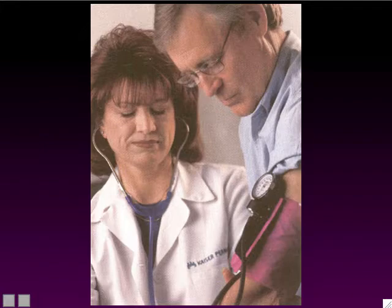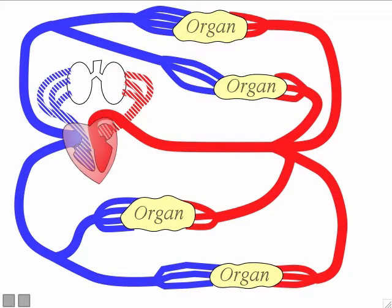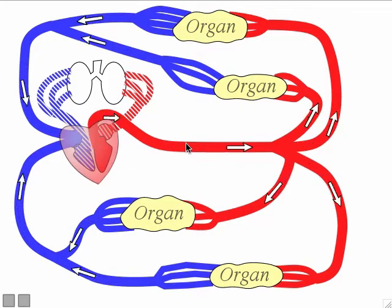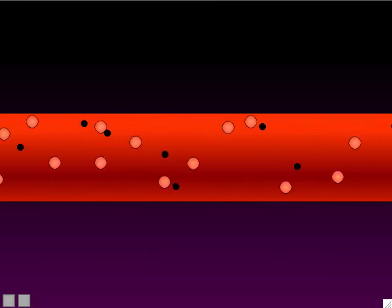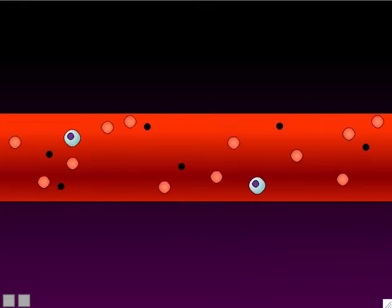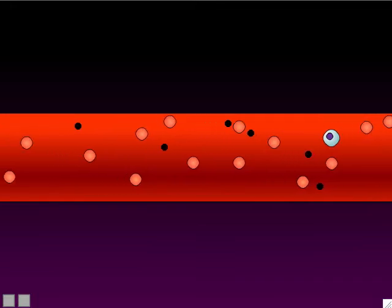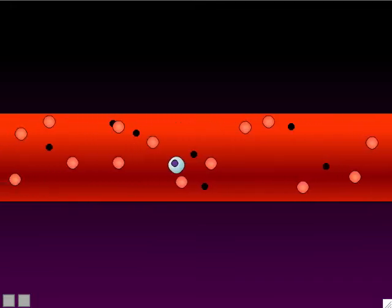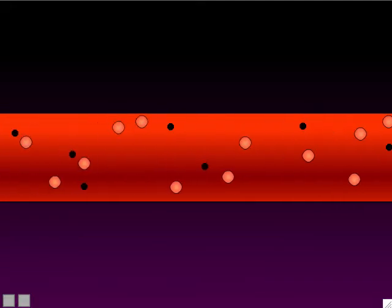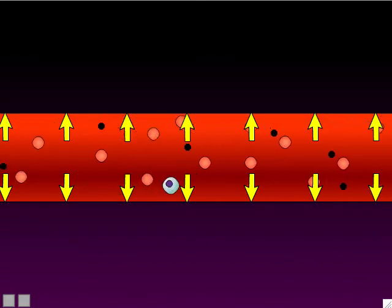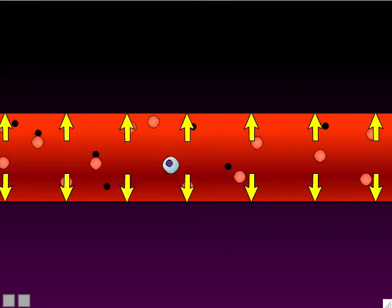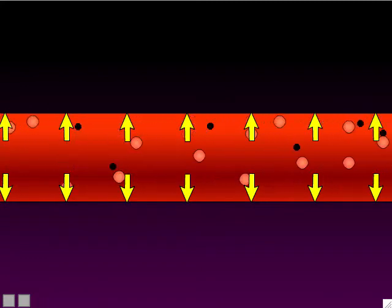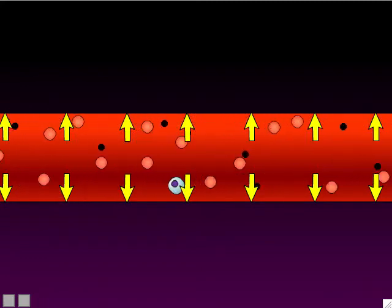To picture what blood pressure is, let's look at this animation of the cardiovascular system and zoom in on one of these arteries. The blood is flowing through that particular artery from left to right. But simultaneously, the blood is pushing outward on the walls of the artery. That outward pressure — the outward force of the blood on the blood vessel walls — is what blood pressure is.